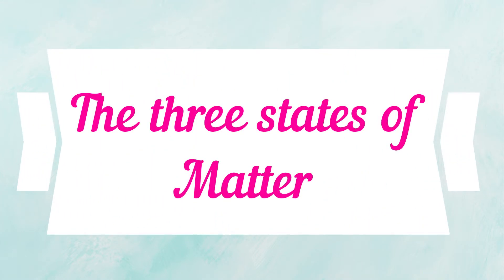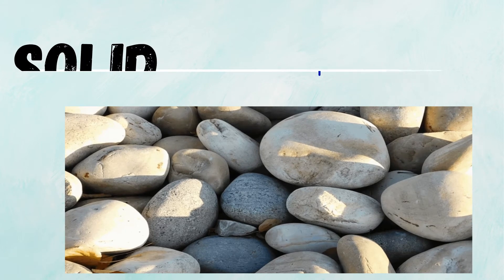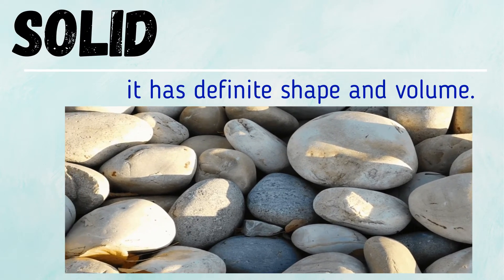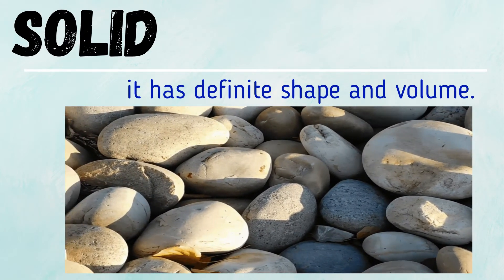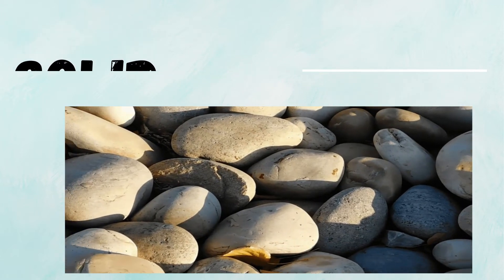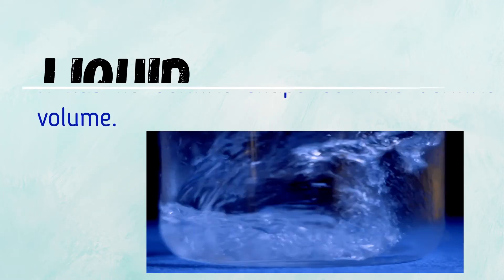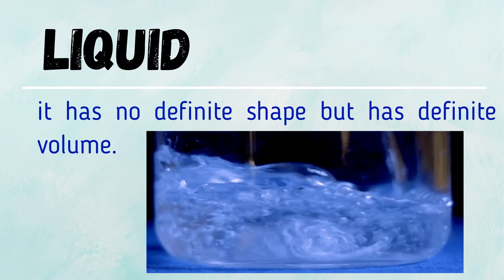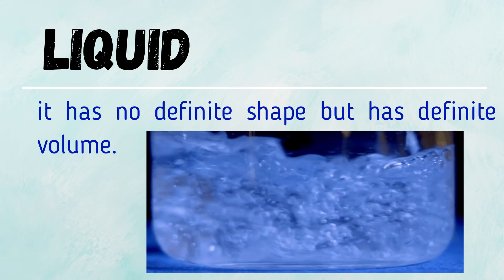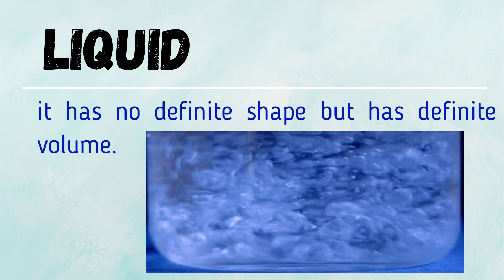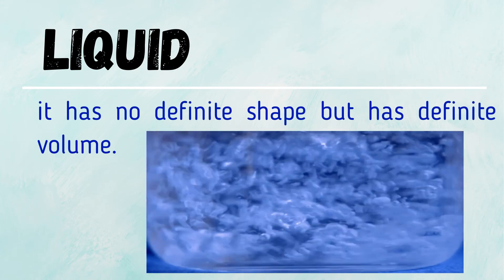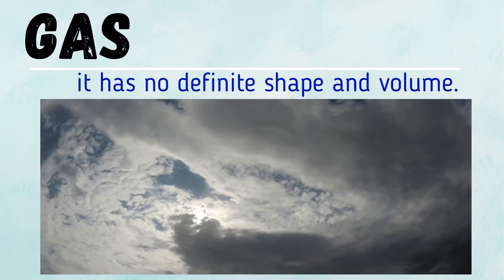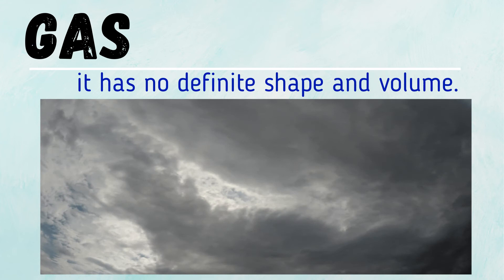The three states of matter: Solid — it has definite shape and volume. Liquid — it has no definite shape but has definite volume. Gas — it has no definite shape and volume.